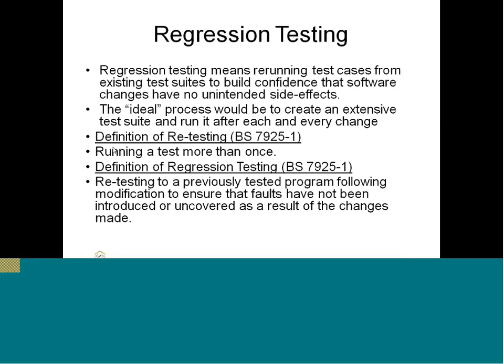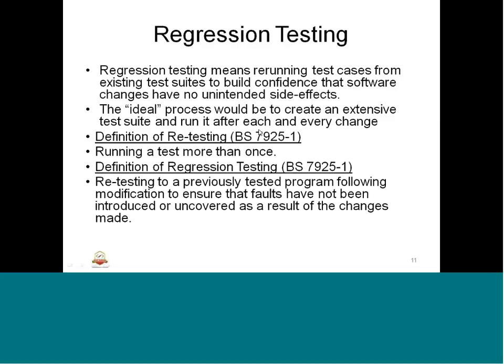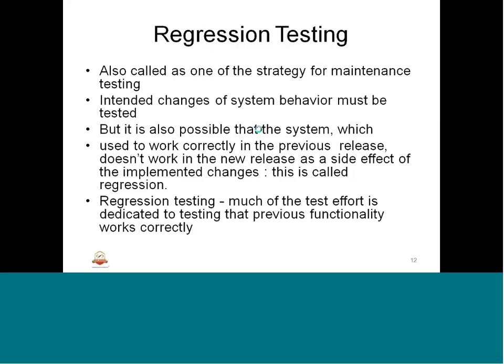The IEEE standard 7925-1 defines re-testing as running a test more than once — the same test repeated. Another definition: re-testing a previously tested program following modification to ensure faults have not been introduced or uncovered as a result of the changes made. Regression testing is important; it is a process followed across all industries, with dedicated automation teams performing batch and script automation for every software version.